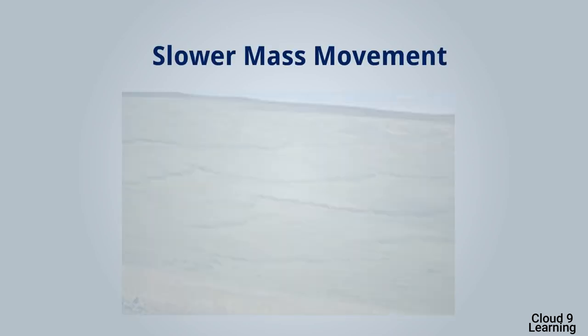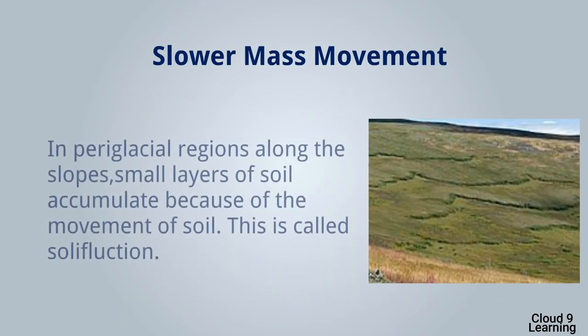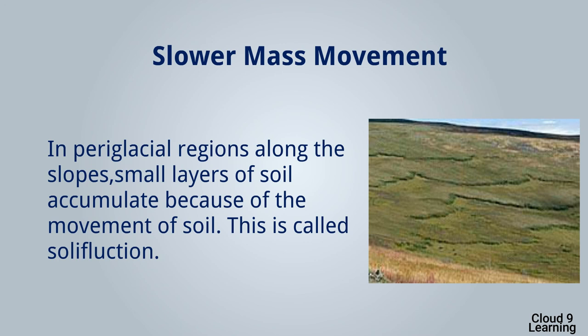Now we will study about slower mass movement. It occurs in areas with dry climate and gentler slopes. Soil creeping is a common phenomenon in such areas. In periglacial regions, i.e. areas adjacent to a glacier, small layers of soil accumulate along the slopes because of the movement of soil — this is called solifluxion.